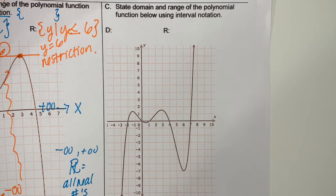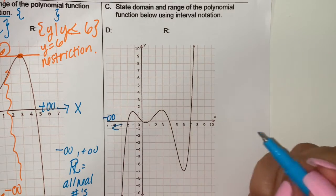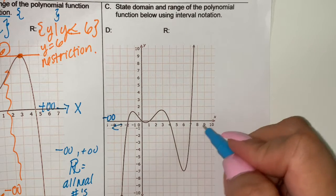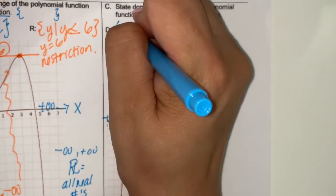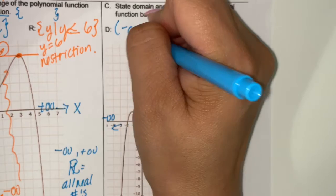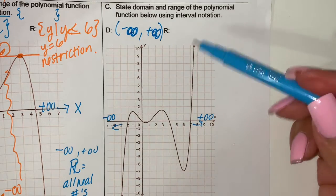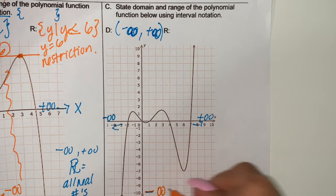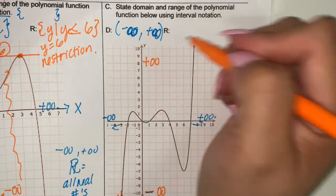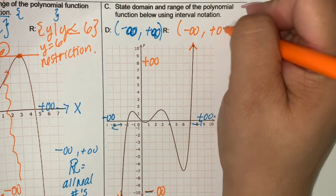State the domain and range of the polynomial function using interval notation. This is negative infinity — nothing is stopping it from going left. Nothing is stopping it from going to positive infinity, so negative infinity comma positive infinity. It looks like a sideways 8. And then we start from negative infinity on the y-axis — there's nothing stopping it from going down. And then we go to positive infinity on the y-axis, and there's nothing stopping it from going up. So it's the same thing — negative infinity to positive infinity.